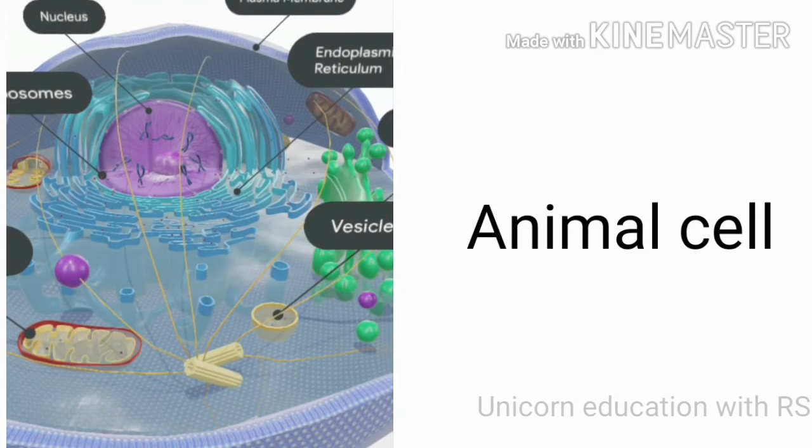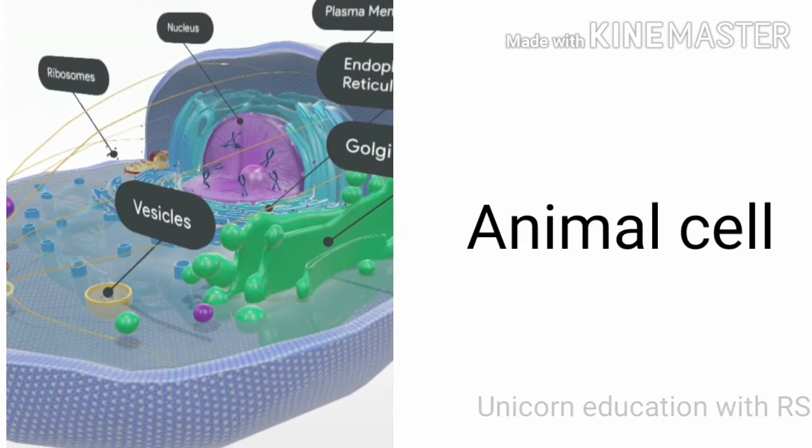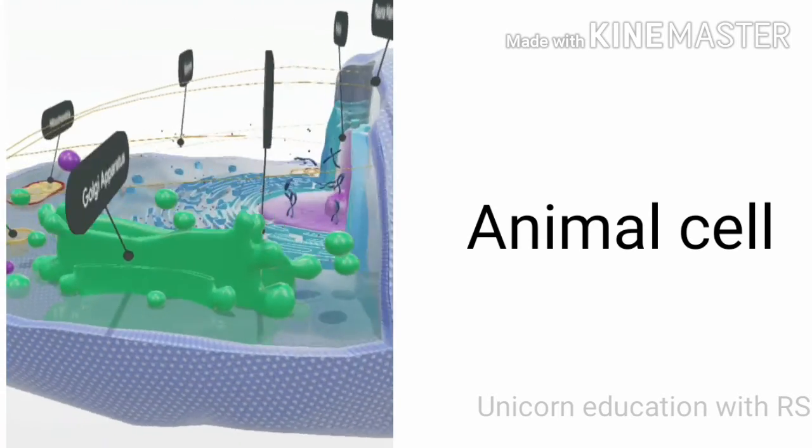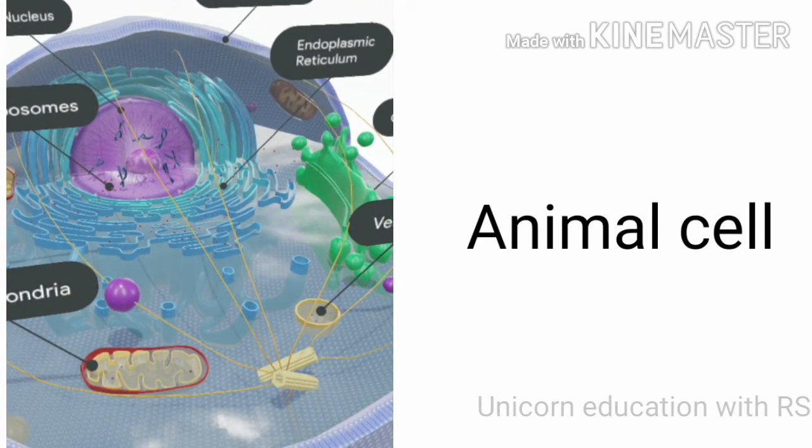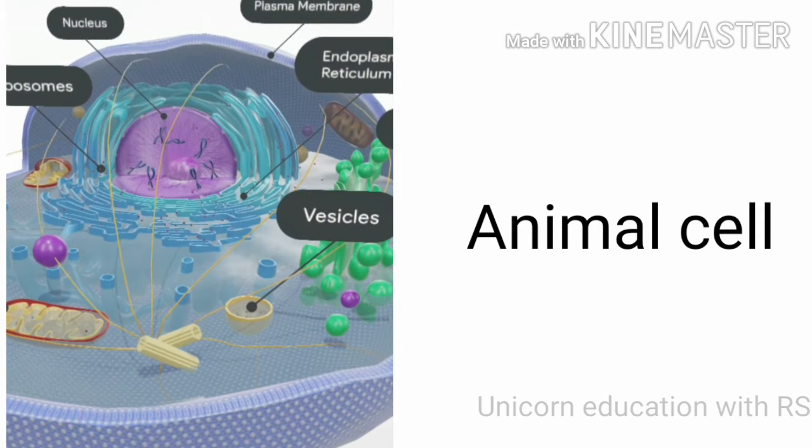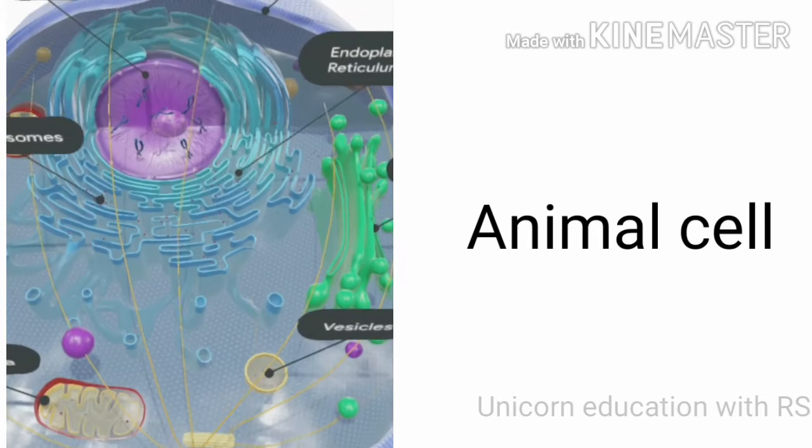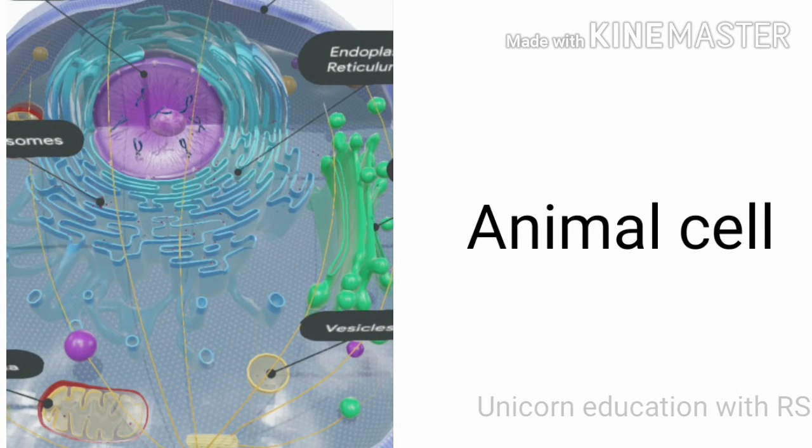Next, the one in green color is known as Golgi apparatus. The power of the cell is mitochondria. The round-shaped yellow color is known as vesicles. The red color round dot is known as ribosomes.